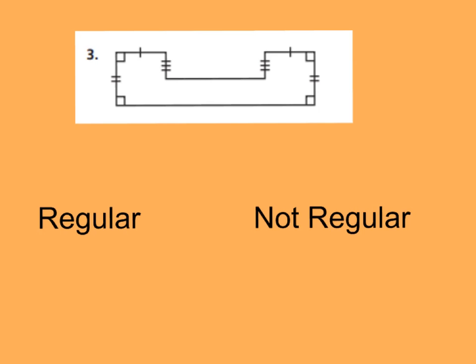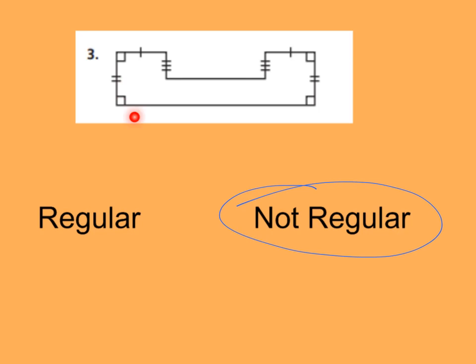For number three, go ahead and write down regular or not regular. You should be writing not regular because, as you can see, all the angles are all right angles, however my sides are not congruent. The top two are congruent, these sides are congruent, and this portion is congruent — but this length is not congruent to every other length. So it's not regular. Now count up all the sides: one, two, three, four, five, six, seven, eight. An eight-sided polygon is an octagon, because it has eight line segments and eight angles.